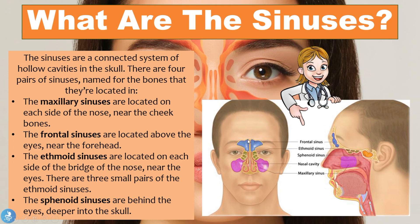We then have the frontal sinuses, which are located above the eyes near the forehead, and they are the hollow cavity located within the frontal bone. We then have the ethmoid sinuses, shown here in green, located on each side of the bridge of the nose near the eyes. There are three small pairs of ethmoid sinuses on each side — one situated on the right side and one on the left.